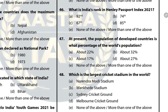Question 46: What is India's rank in the Henley Passport Index 2021? The answer is A — 92nd. Rank one is Japan. Question 47: At present, the population of developed countries is about what percentage of the world's population? The answer is A — twenty-two percent.